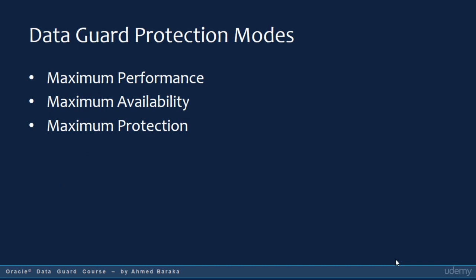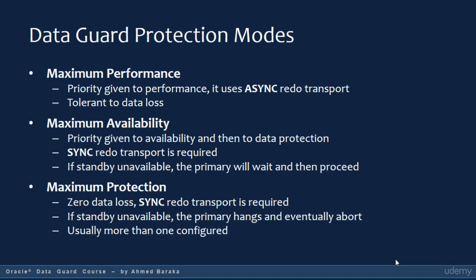Data Guard can operate in three modes: Maximum Performance, Maximum Availability, and Maximum Protection. When Data Guard operates in Maximum Performance mode, priority is given to performance, and it uses asynchronous redo transport. The primary database does not wait for the standby database to receive the redo log and operates normally, so performance is not affected. However, the application must be tolerant to data loss.